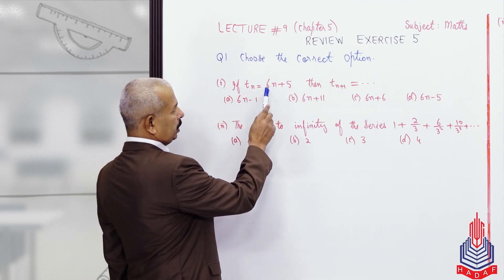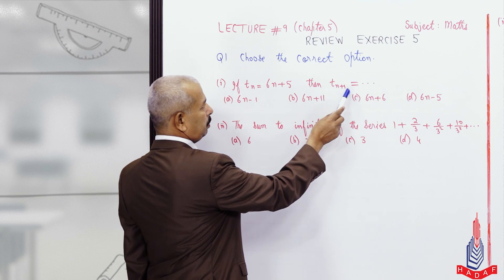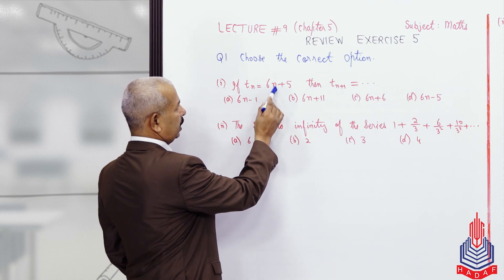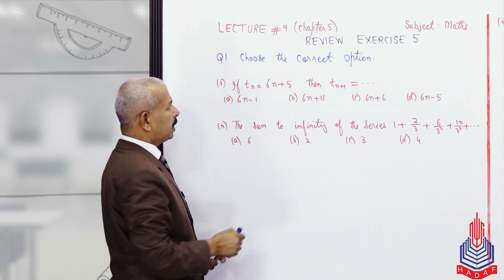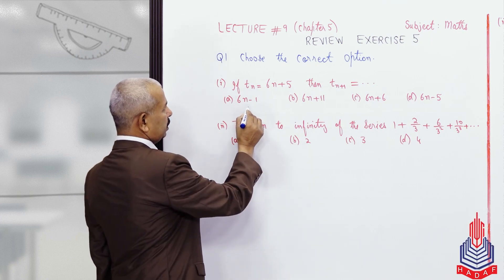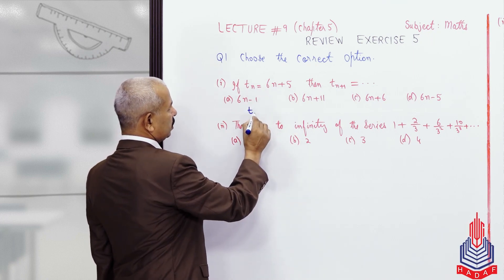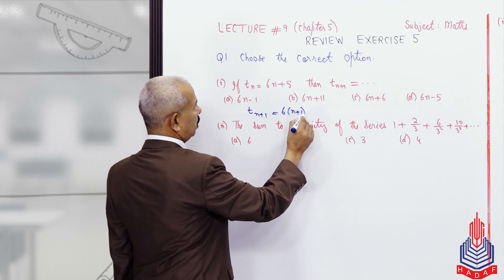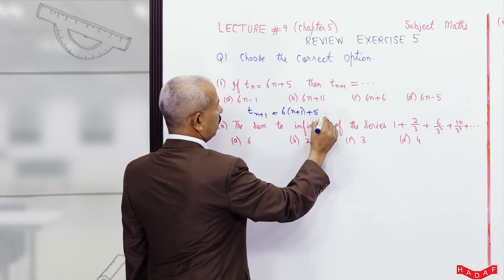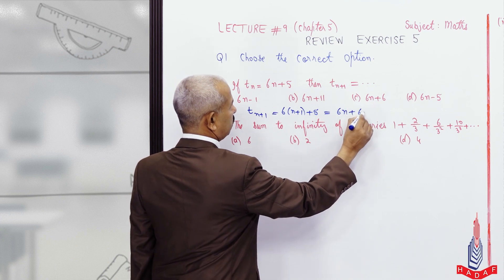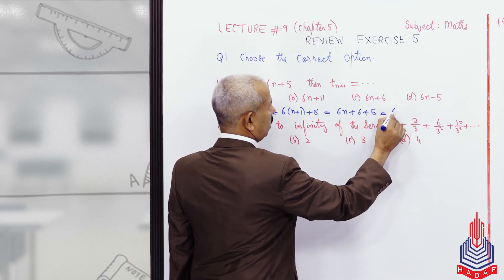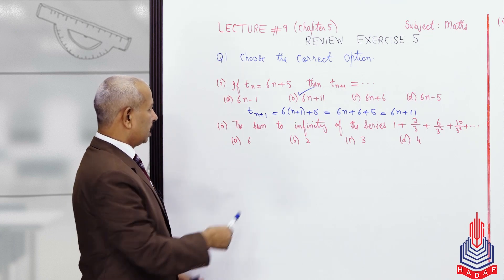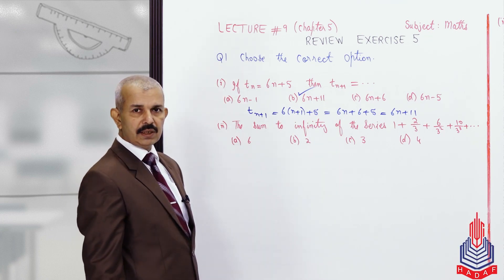If TN is equal to 6N plus 5, then TN plus 1 will be found by replacing N with N+1. This gives us 6(N+1) plus 5, which is equal to 6N plus 11. So Option B is the correct option. Now this next question is a tricky question.